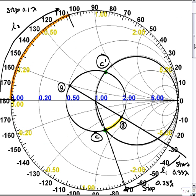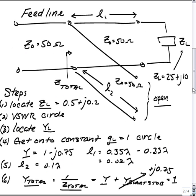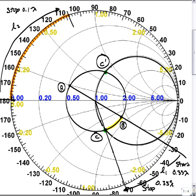So I'm going to run through an example here of how to generate a matching network with the help of a single open stub. So if we have a load impedance given by 25 plus j10 the first thing we need to do is locate our normalized load impedance which is 0.5 plus j0.2. And where is that on the Smith chart? That's going to be our point A here.